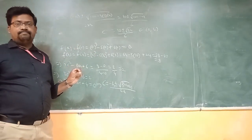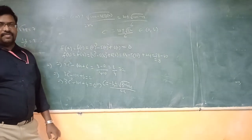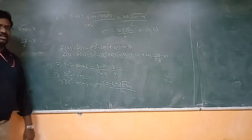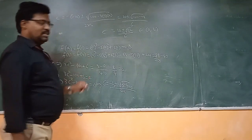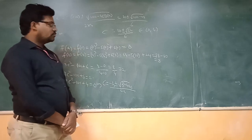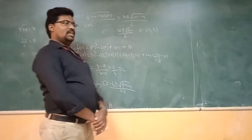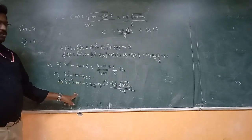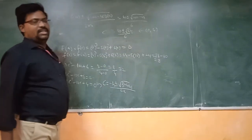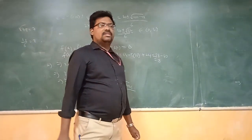Since c is approximately 3-point-something, it lies within the open interval (0, 4). So all conditions are satisfied: f(x) is continuous on [0, 4], differentiable on (0, 4), and there exists c in (0, 4) such that f'(c) = (f(b)−f(a))/(b−a). Therefore Lagrange's theorem is verified.